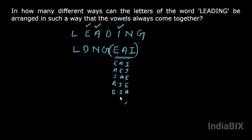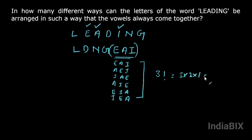Or E-I-A, or I-E-A. There are six ways in which these three vowels can be arranged among themselves. Three letters can be arranged in three factorial ways. Three factorial means three into two into one, that is six ways. We have seen the six patterns of arrangement: one, two, three, four, five, six.